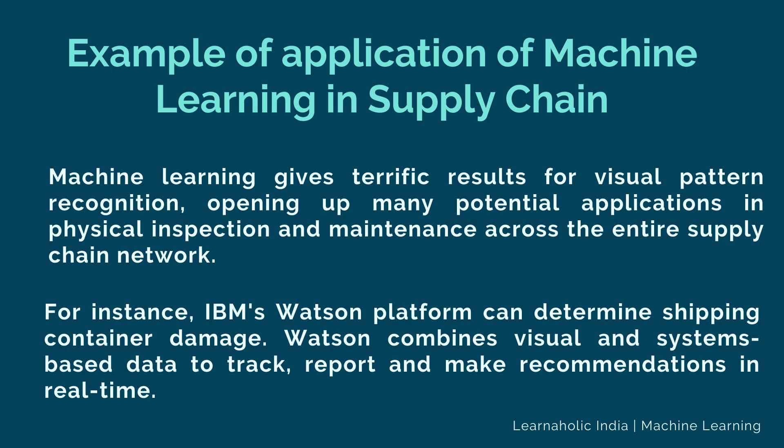For instance, IBM's Watson platform can determine shipping container damage. Watson combines visual and system-based data to track, report, and make recommendations in real-time. In past years, stock managers relied extensively on primary methods to evaluate and forecast inventory. When combining big data and machine learning, better forecasting techniques have been implemented. In terms of sales, this means an increase of 2–3% due to the potential reduction in inventory costs.